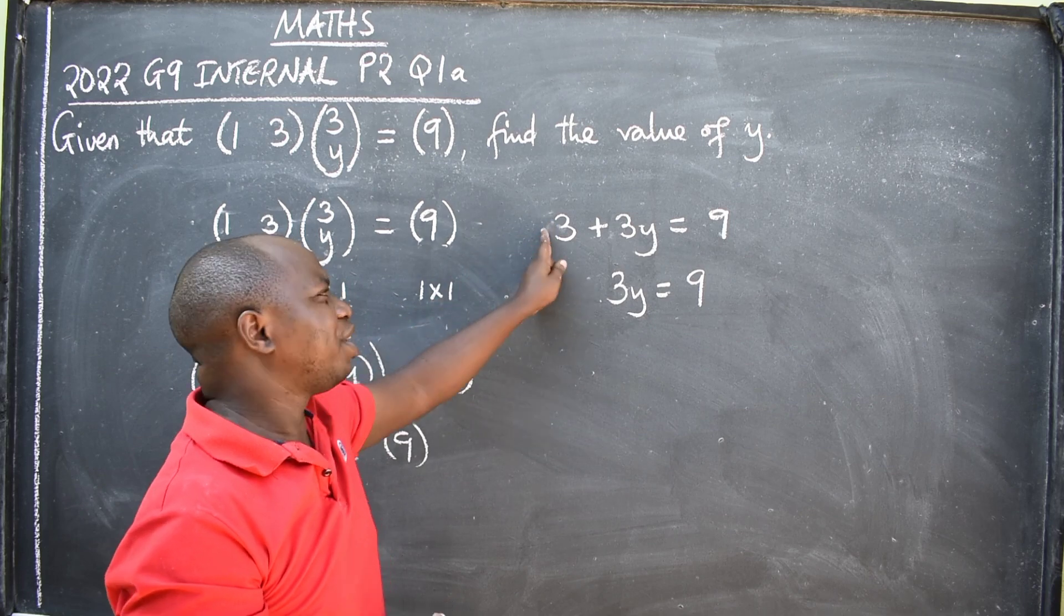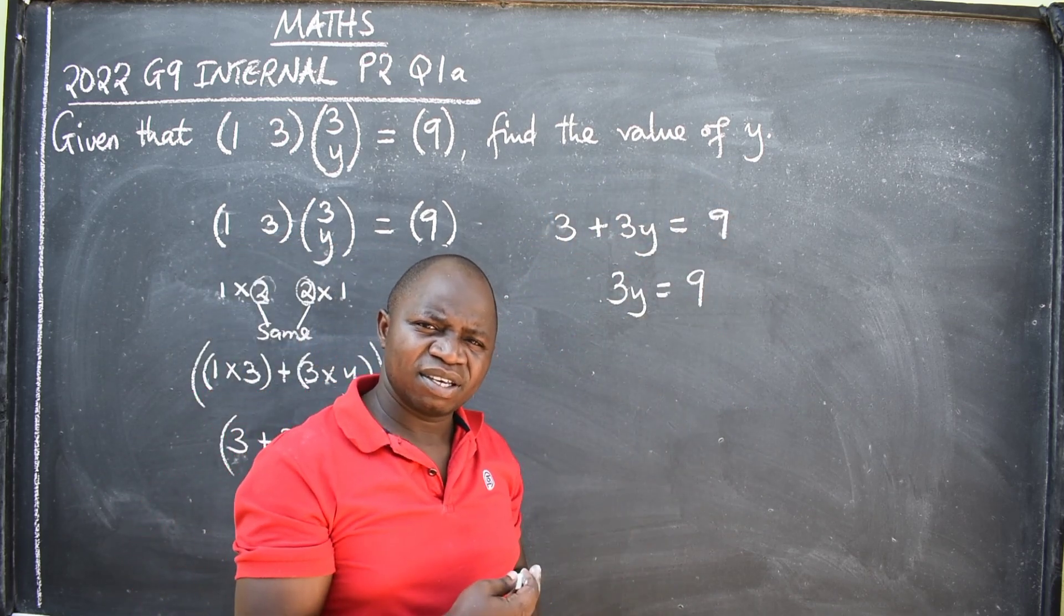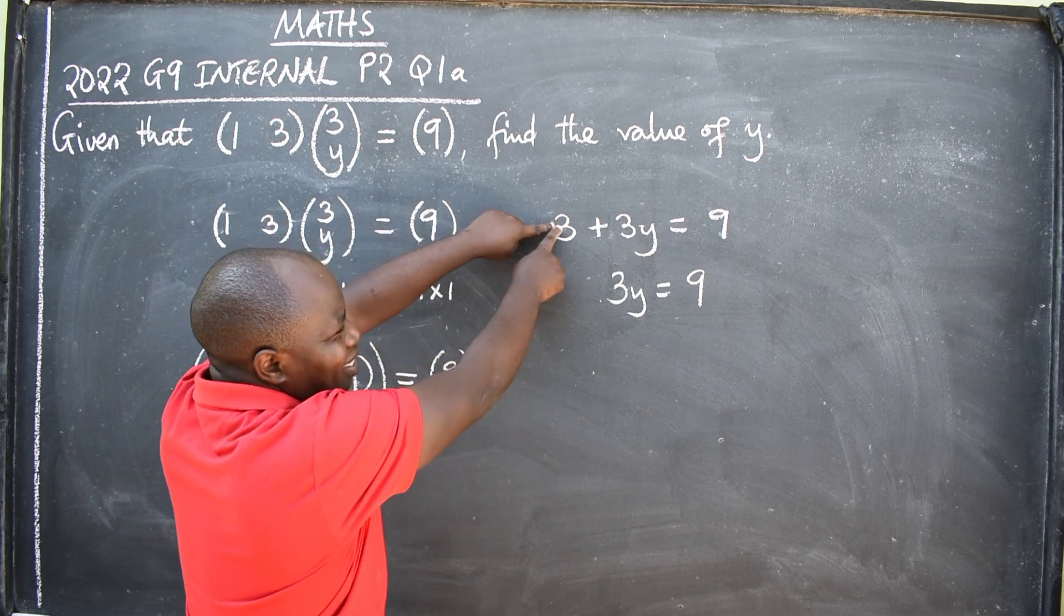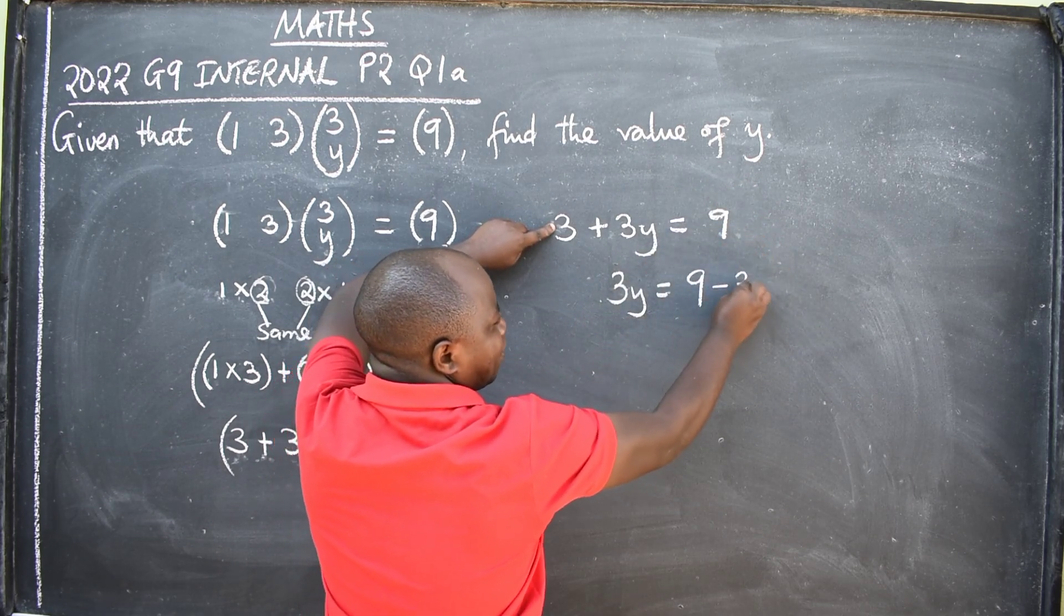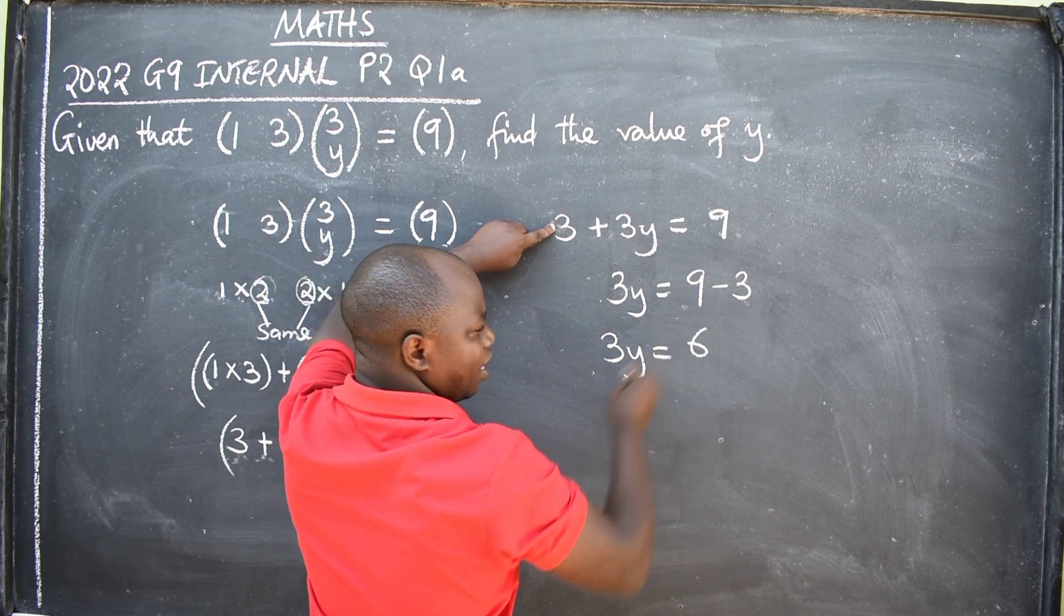When it crosses the equal sign, it changes its sign. It becomes negative or minus. So, since this is positive, when it goes to this side here, it will be minus three. Then, I'll say three y is equal to six when I subtract.